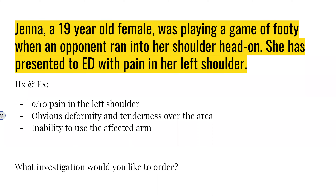In terms of what investigation to order: there's no point ordering bloods. Instead we're looking for imaging. We've got three main forms: x-ray, CT, and MRI. We won't use MRI — it gives all the information we'd ever need, but it takes a really long time and is very expensive. We probably won't do a CT either — it gives more information than an x-ray but takes longer, is more expensive, and involves a large dose of radiation you wouldn't want to give a 19-year-old unnecessarily. So we'll choose an x-ray.